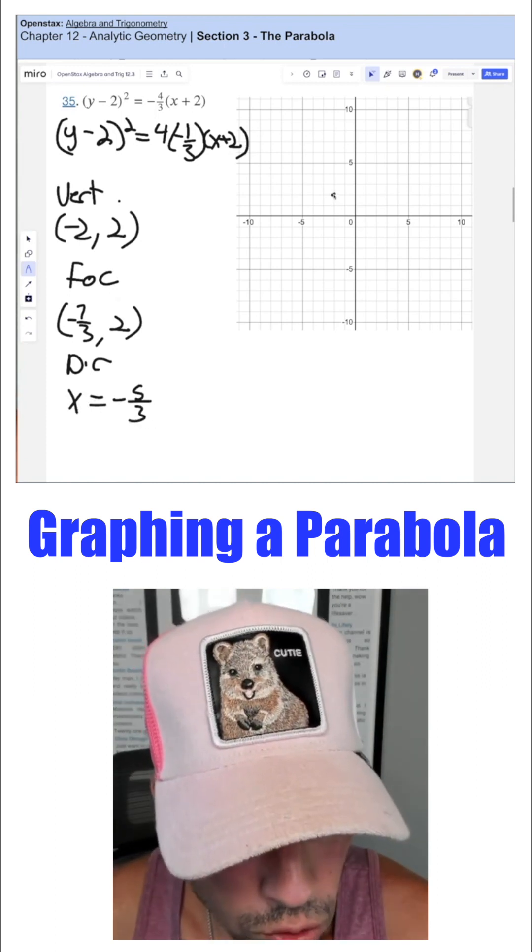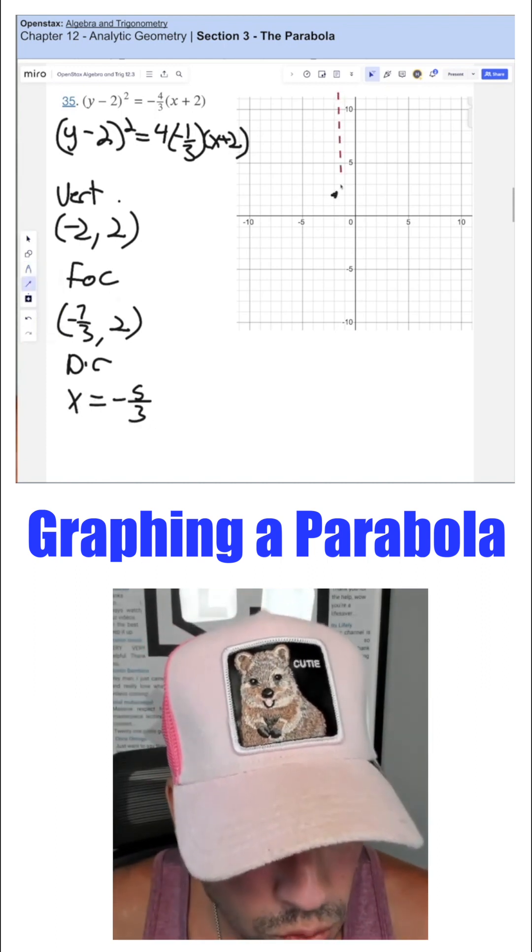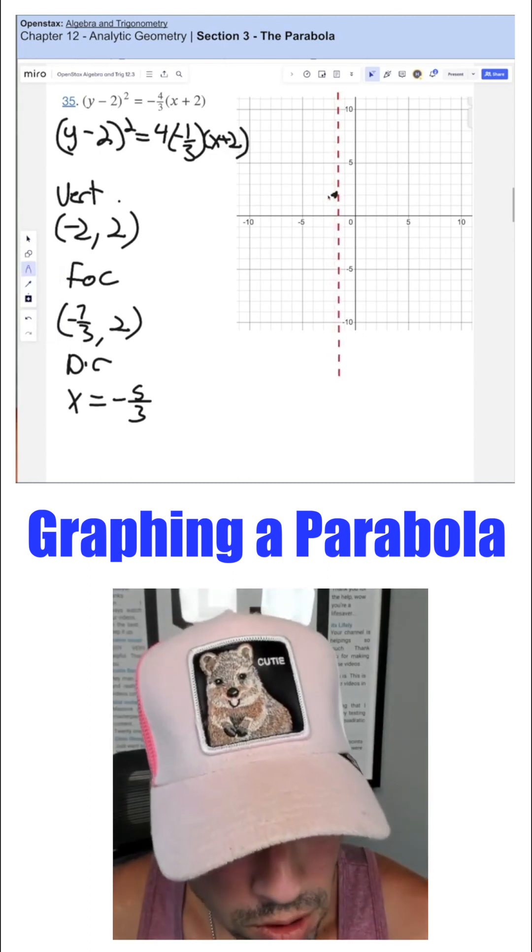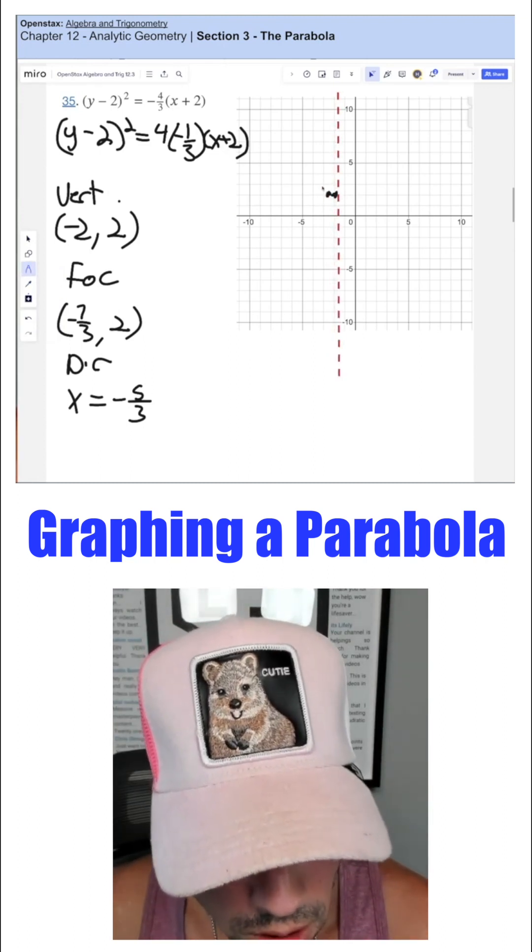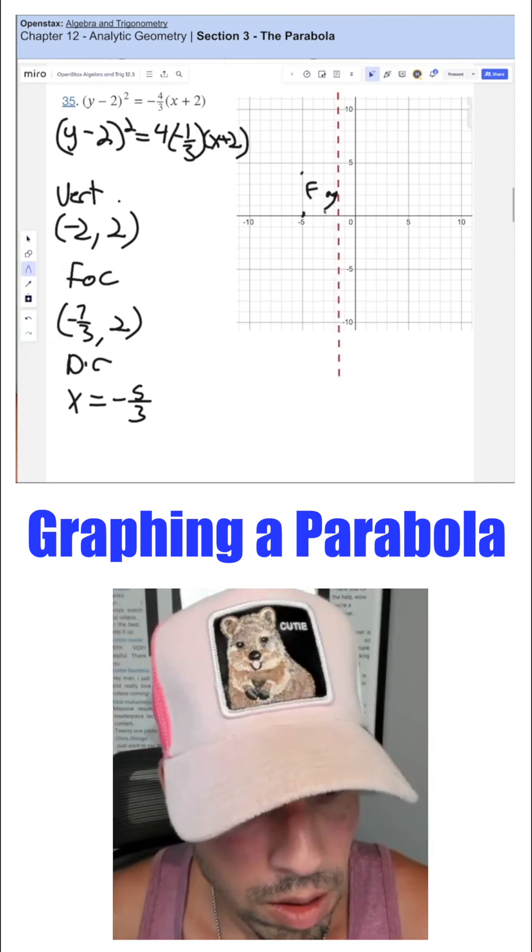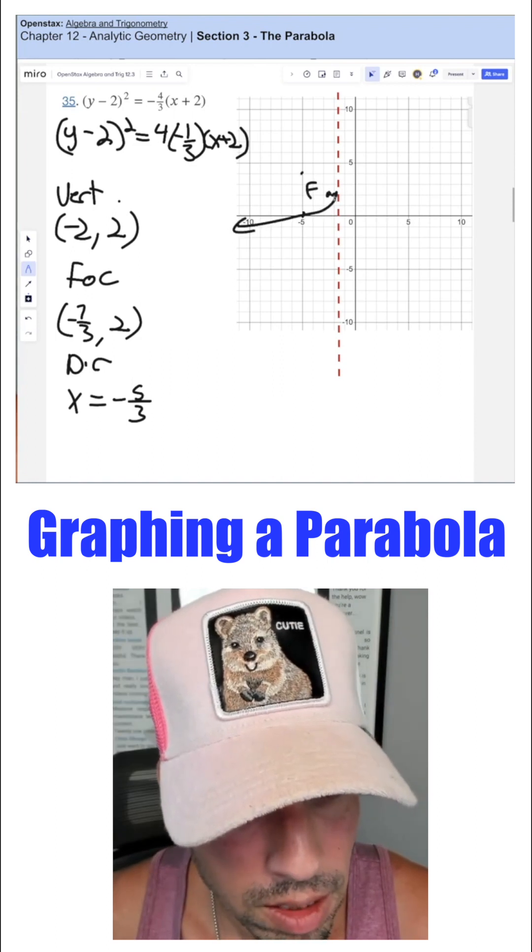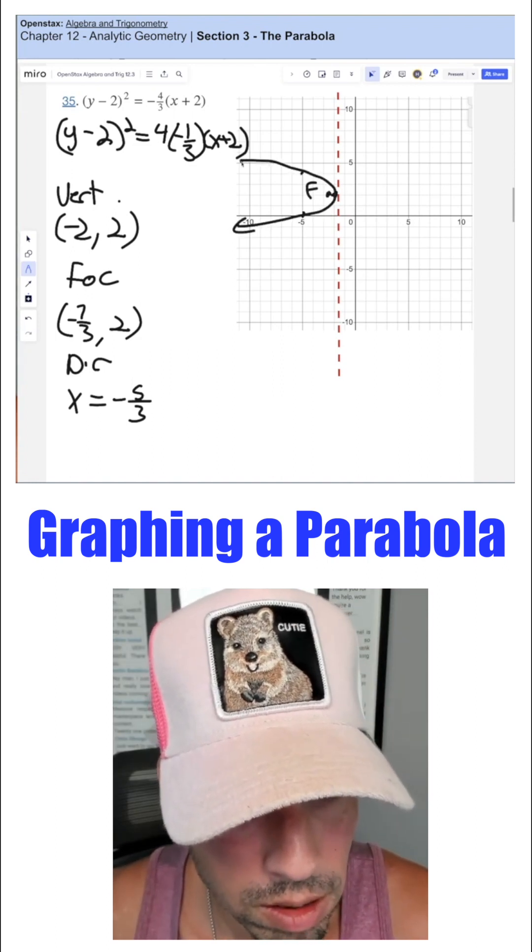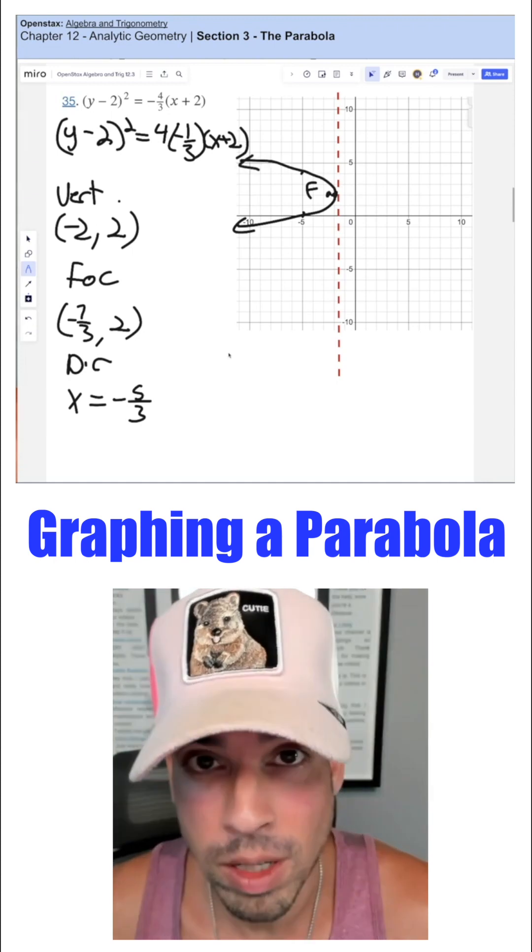So our vertex is at negative two, two, our directrix is right behind it. And then our focus is one third to the left. And then we kind of wrap it around like this, wrap it around like this, there's your graph, that's how you do it. Done.